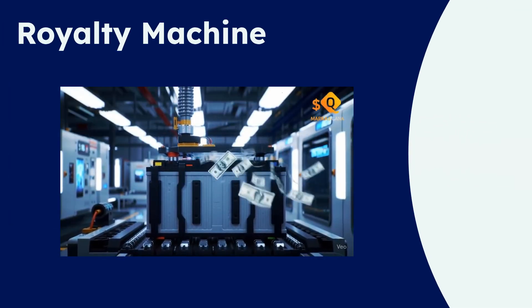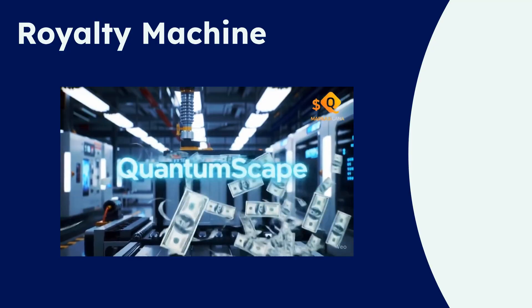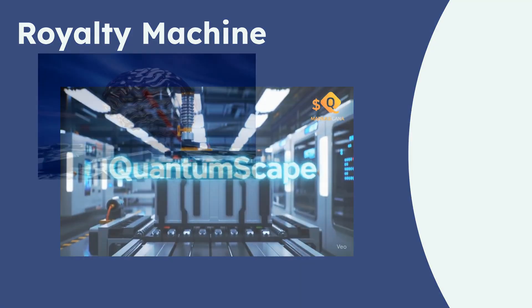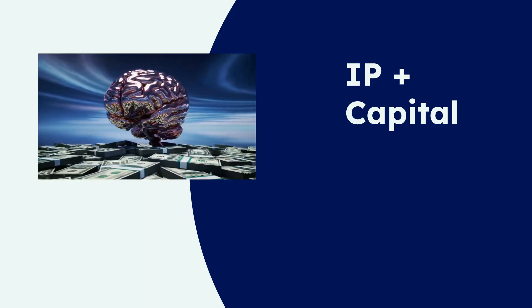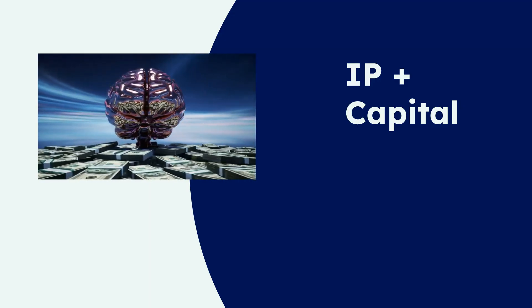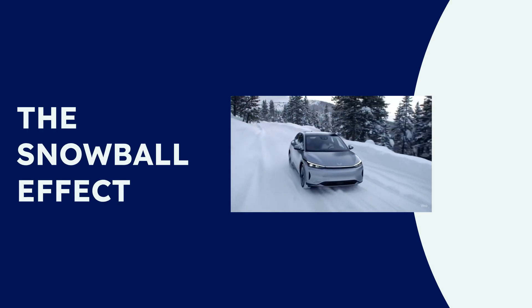This confirms their brilliant business model. QuantumScape provides the intellectual property, the brains. Their partners provide the capital for factories, the brawn. This sets them up to be a high-margin royalty machine, just like tech titans ARM and Qualcomm.